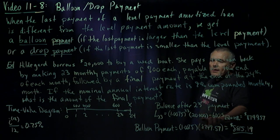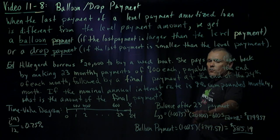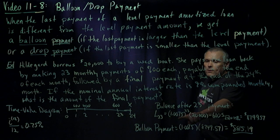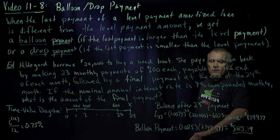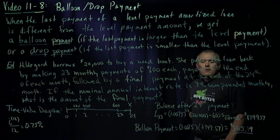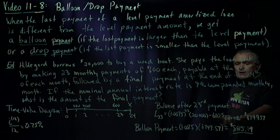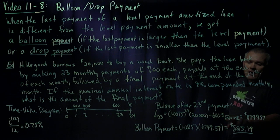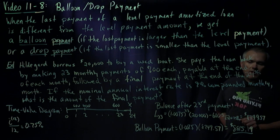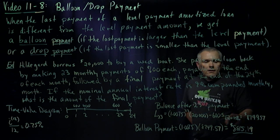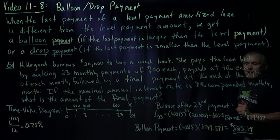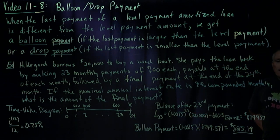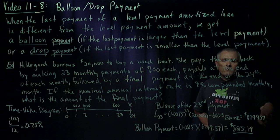We accumulate the initial loan balance for 23 periods. So we get 1.0075 to the 23rd times that 20,000, and then we subtract off the accumulated payments that we've made so far. That's where the 600 S angle 23 of 0.75% is coming from.